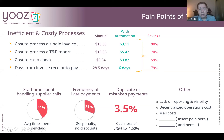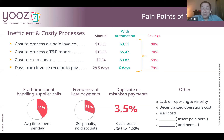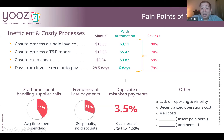Moving on to the Arden Partners study and the pain points of manual AP — you're probably going through a lot of these right now. The cost to process a single invoice manually is around $15; with automation you get closer to $3, an 80% savings. Days from invoice received to pay is around 28 days on average; with automation we'll try to get you closer to six days. Additionally, 41% of the time staff is handling supplier calls, 31% late frequency payments, and duplicate payments — all of which we want to help you eliminate.